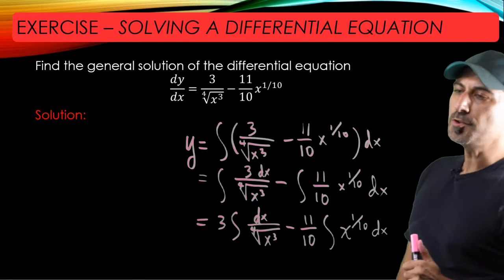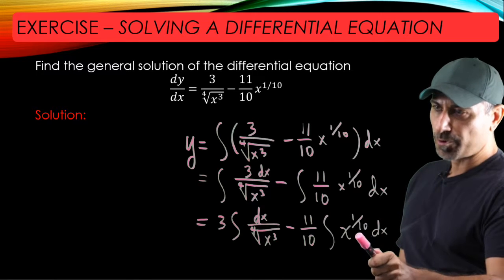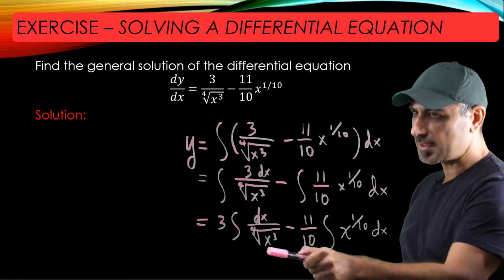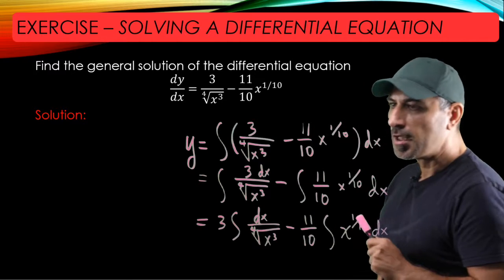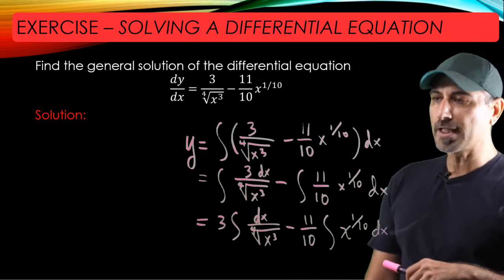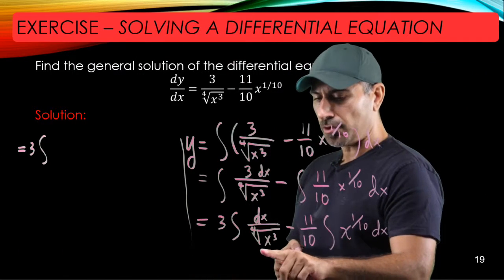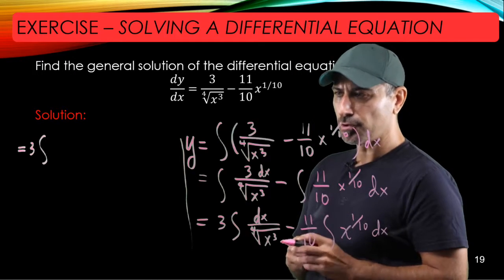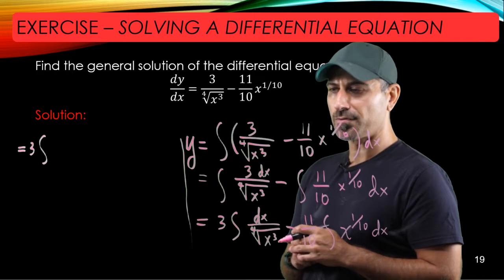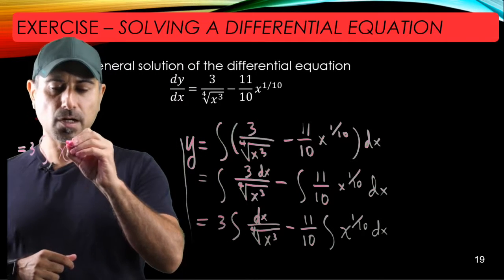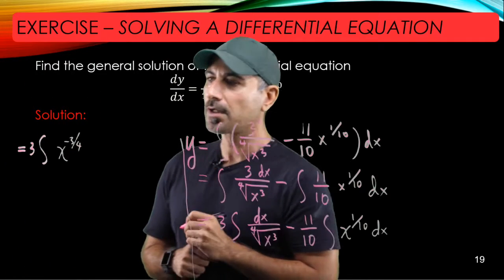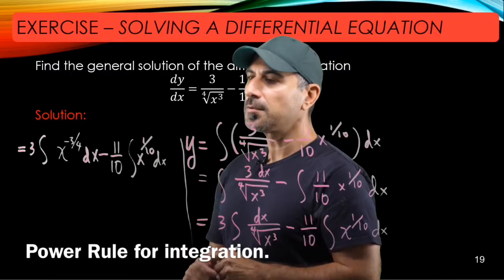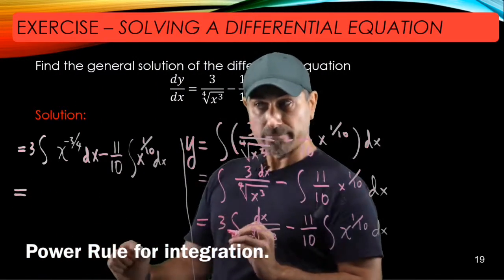Now we're going to utilize the power rule. The first term with x to a power is obvious, but the second term doesn't seem obvious at first. We convert it: this term is 1 over x^(3/4), which is the reciprocal of x^(3/4), so we write it as x to the power of negative 3/4. Now it's in the form where we can apply the power rule for integration.